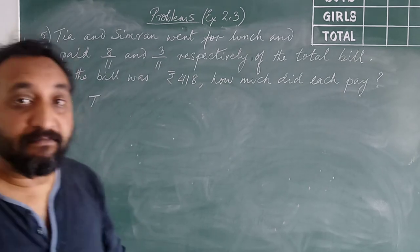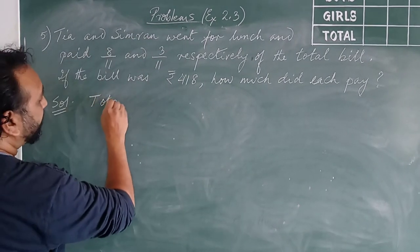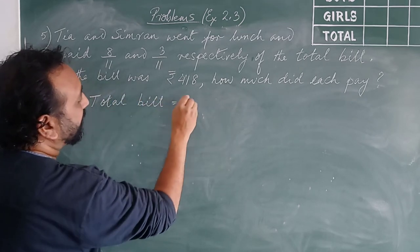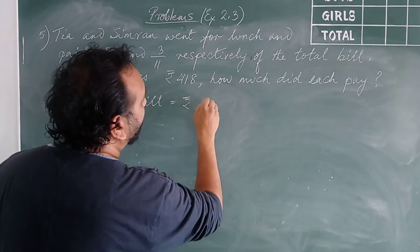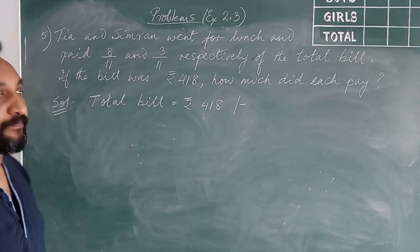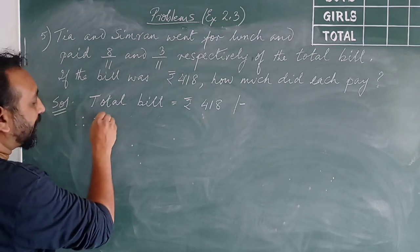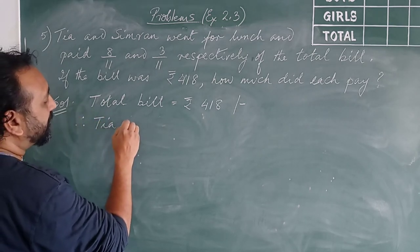Is the total given? Yes. So total bill is equal to rupees 418. So we have to find how much does Tia pay. Therefore, Tia paid...